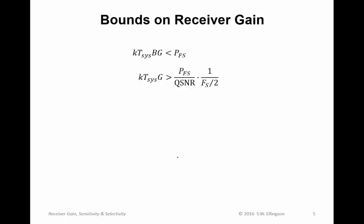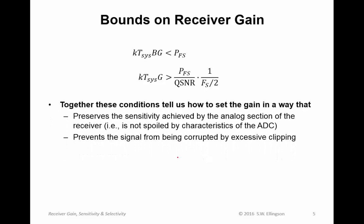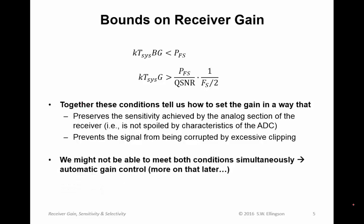So now we've established two bounds on the receiver gain, one a lower bound and one an upper bound. Together, these conditions tell us how to set the gain such that it preserves the sensitivity achieved by the analog section of the receiver and prevents the signal from being corrupted by excessive clipping. We might not be able to meet both conditions simultaneously, and this will lead us to the concept of automatic gain control. Keep in mind that many assumptions are built into these expressions.